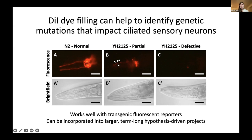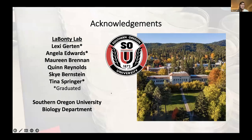DiI dye filling can easily be incorporated into larger long-term hypothesis-driven projects. As I'm only in my second year at SOU, I haven't yet had the chance to bring this into the classroom, but I'd be happy to talk to people about how this could be easily brought into a genetics or cell biology lab to test and learn more about mutations and genes that affect ciliated sensory neurons. I'd like to thank the six undergraduate students who helped obtain the images and write up the manuscript, and I'd like to thank the Southern Oregon University Biology Department.